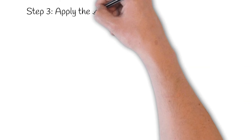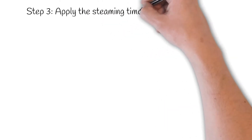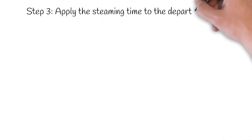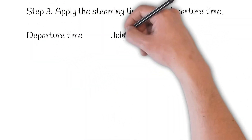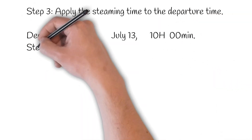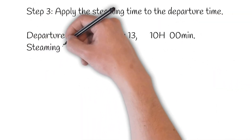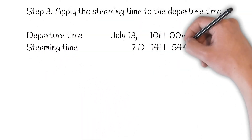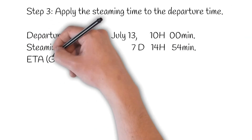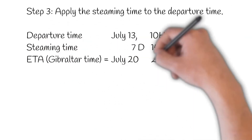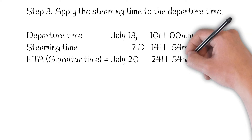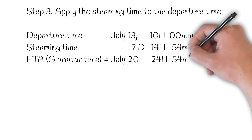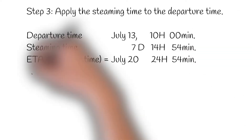Step 3: Apply the steaming time to the departure time. Departure time is July 13th at 1100 hours. Add steaming time of 7 days, 14 hours, and 54 minutes. That gives the ETA in Gibraltar time, which is July 20th at 24 hours 54 minutes — or more precisely, July 21st at 0054 hours.